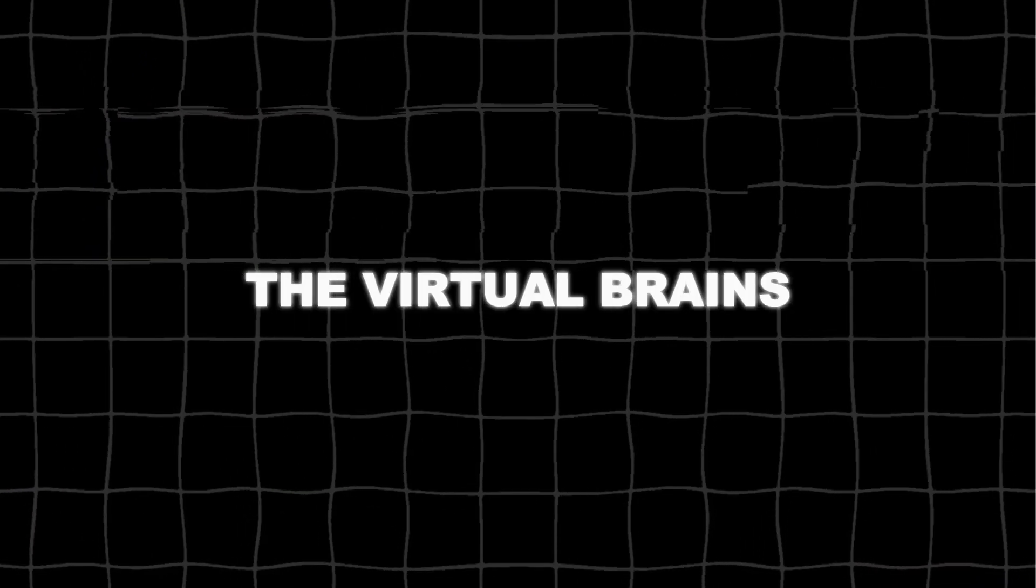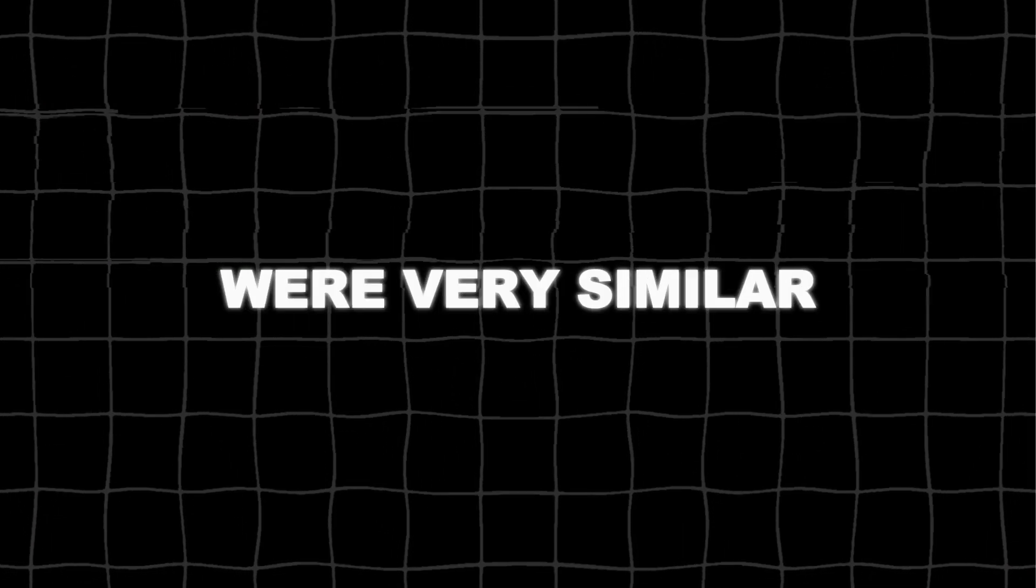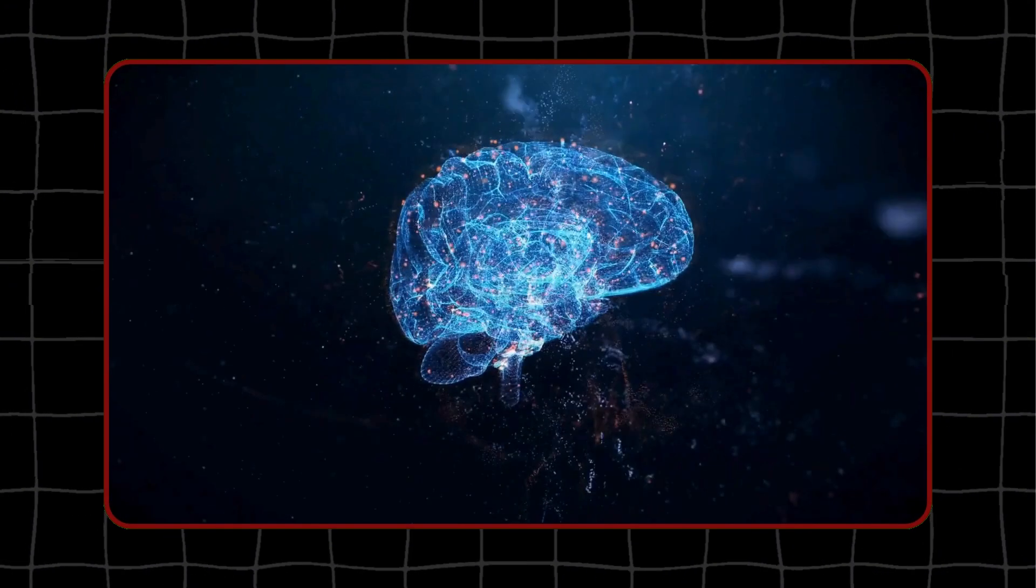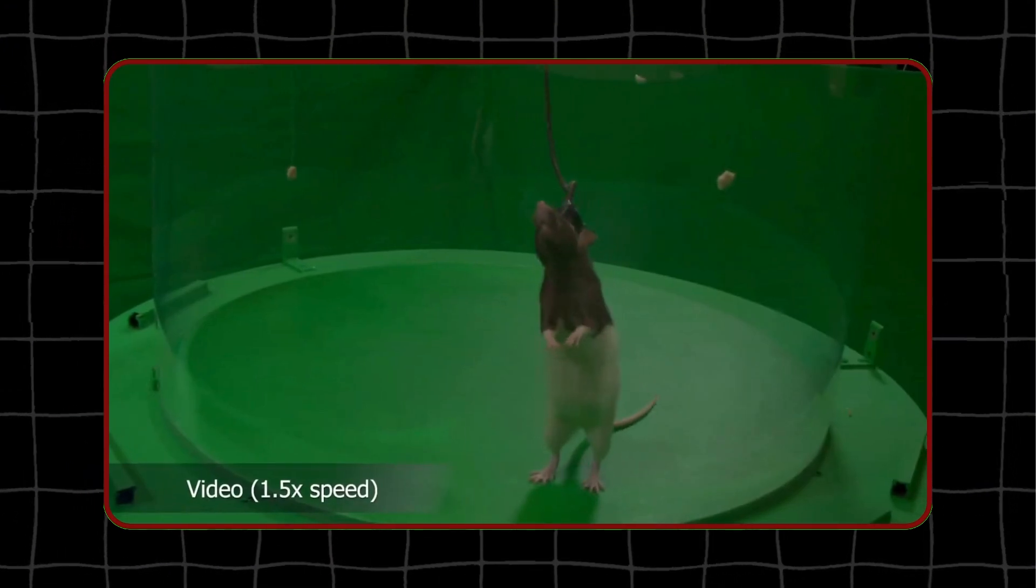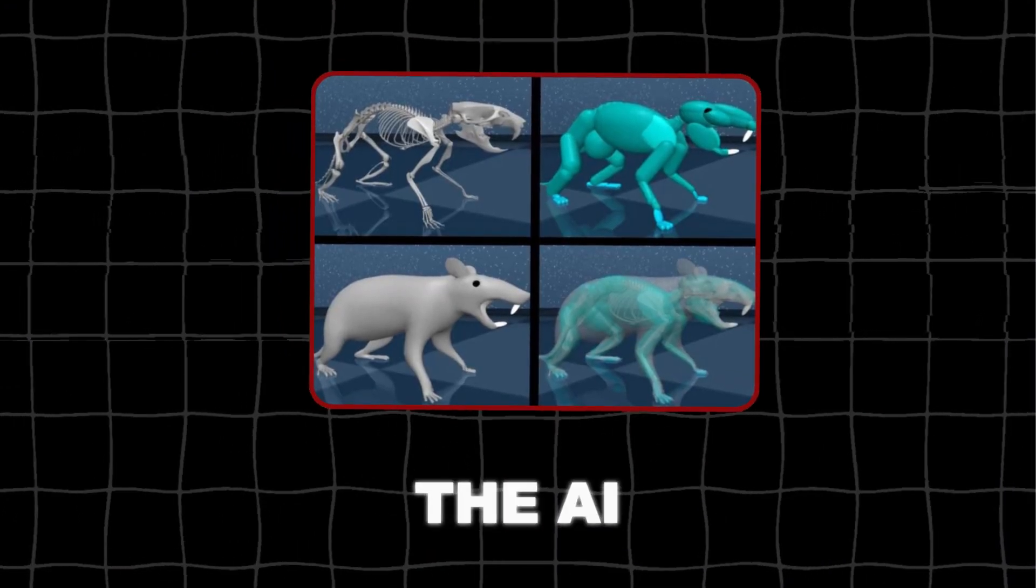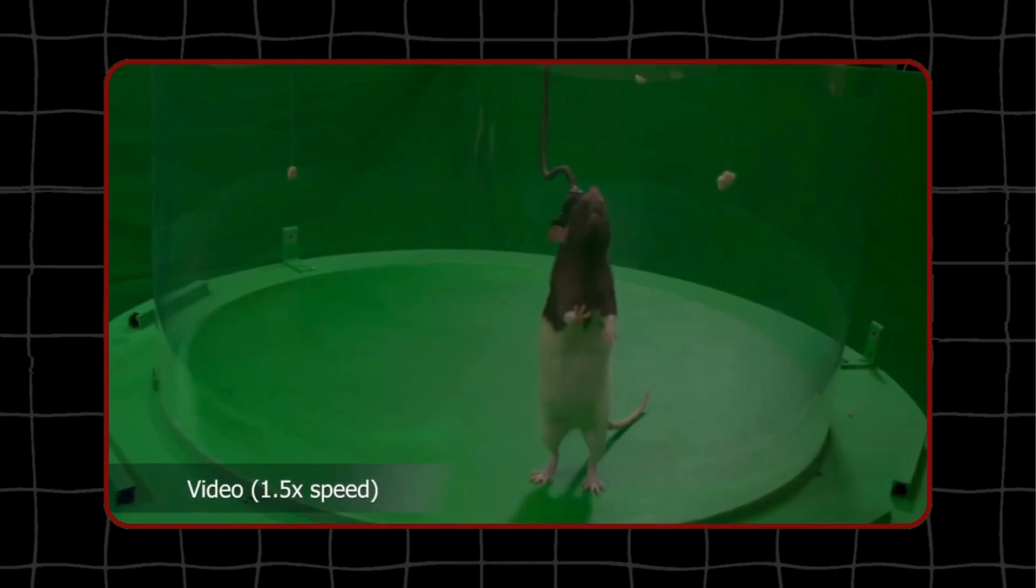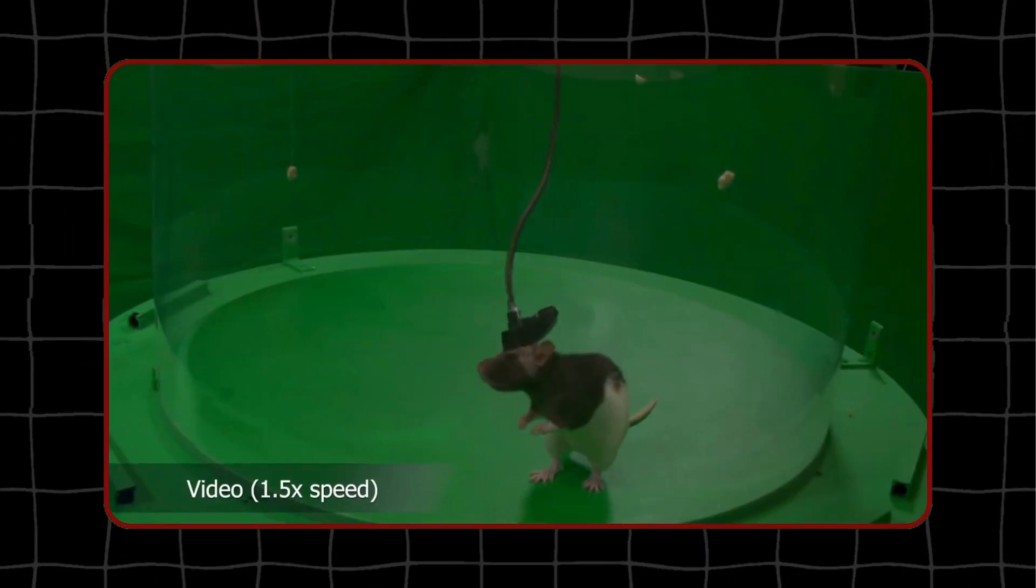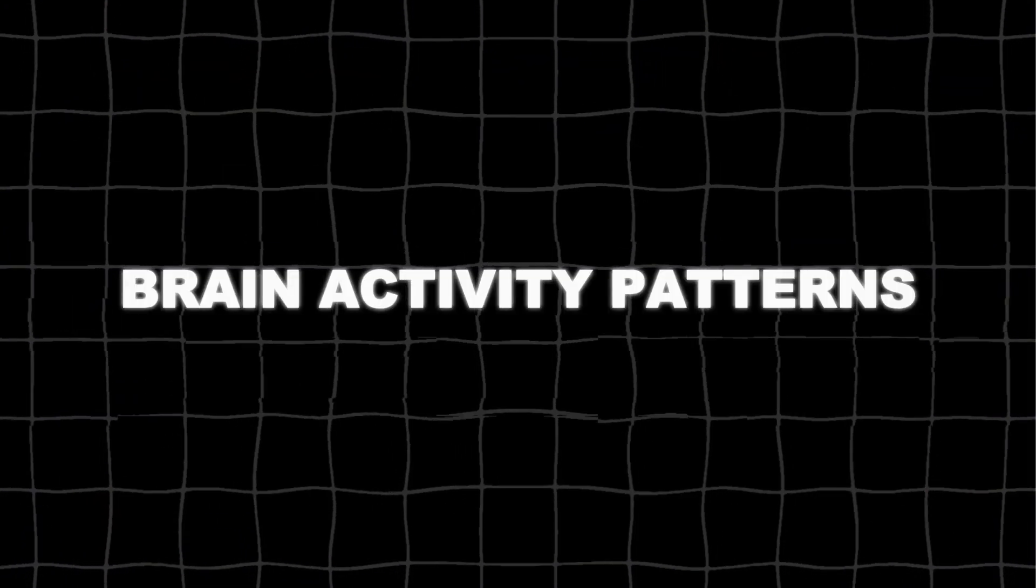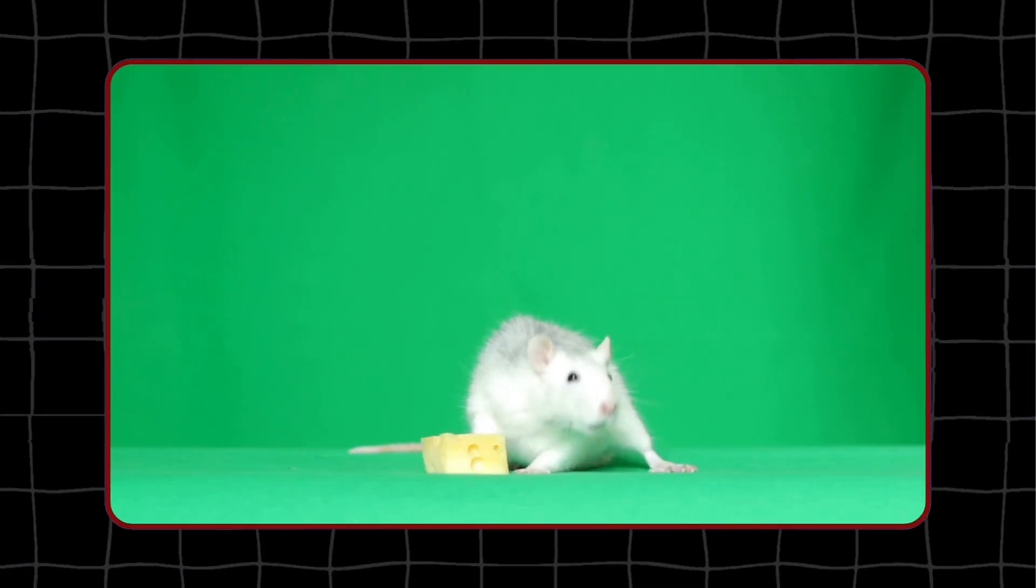The researchers found that the virtual brain's neural activity patterns were very similar to those recorded from real rats' brains while they were moving. This similarity suggests that the AI had learned ways to control movement just like real brains do. The AI not only learned to move the virtual rat, but also developed brain activity patterns similar to those of actual rats.